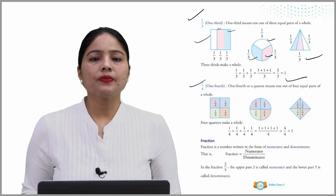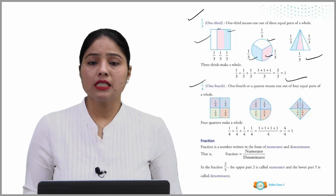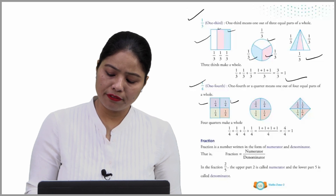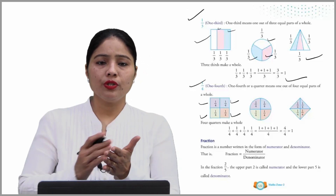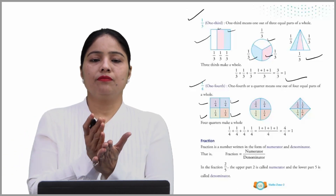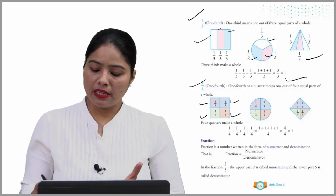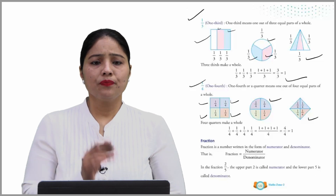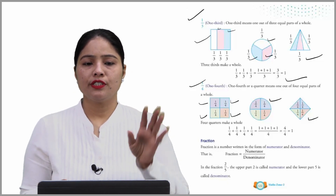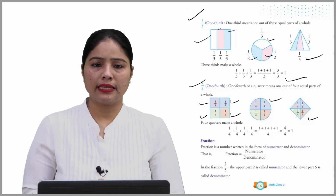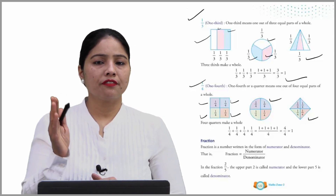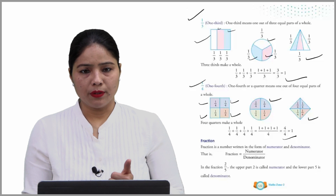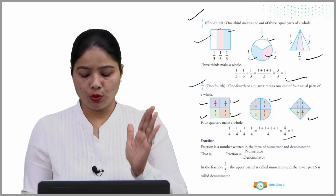One fourth means one out of four equal parts of a whole. Like this is one fourth, one fourth, one fourth, and one fourth. ये एक figure के चार बराबर हिस्से हैं. Similarly, ये circle के चार बराबर हिस्से हैं and same with that one too. Four quarters make one whole — जब four quarters मिल जाते हैं, वो हमारा whole बनाते हैं. One fourth plus one fourth plus one fourth plus one fourth — four over four — तो four में से four गया, one. So, these are the concepts of one fourth.